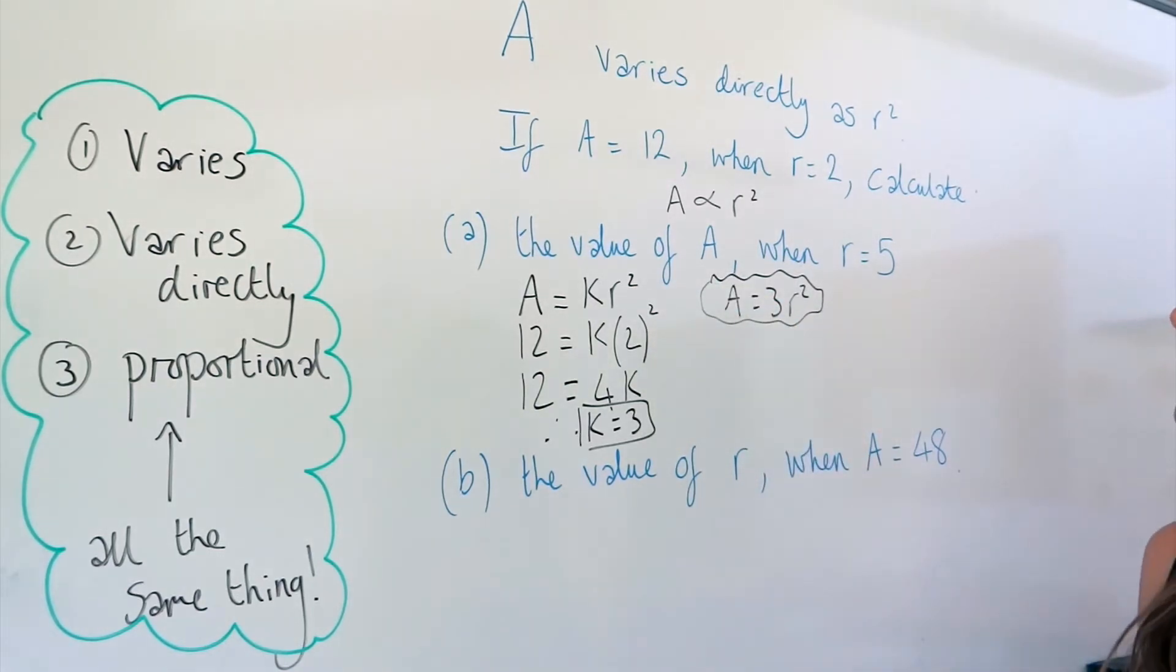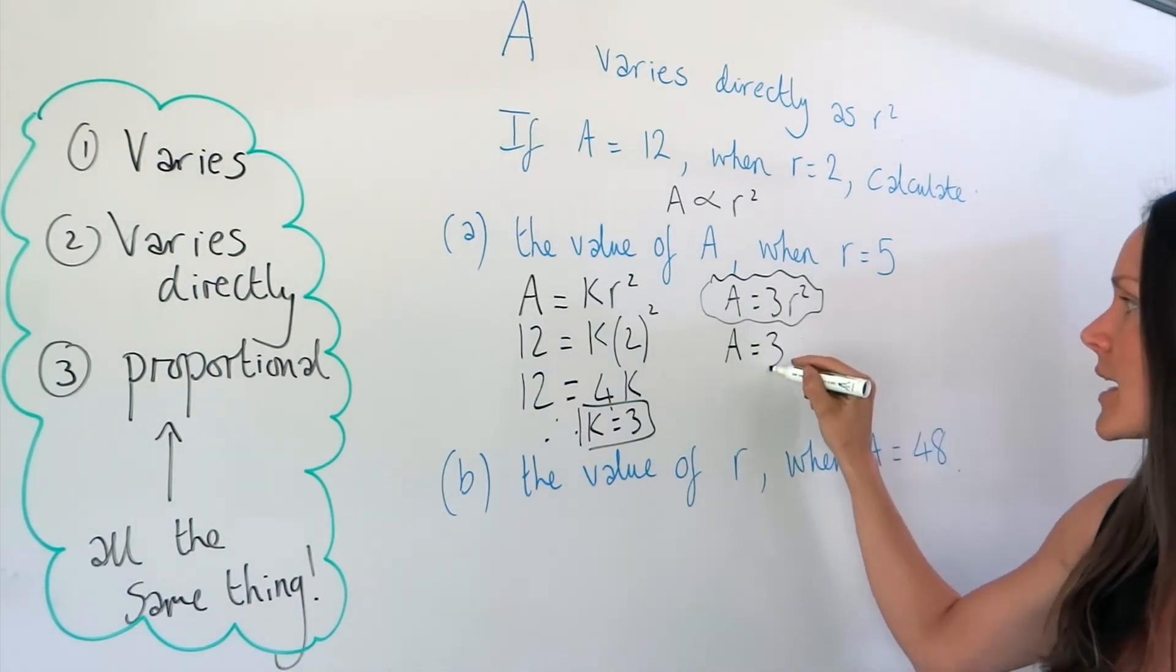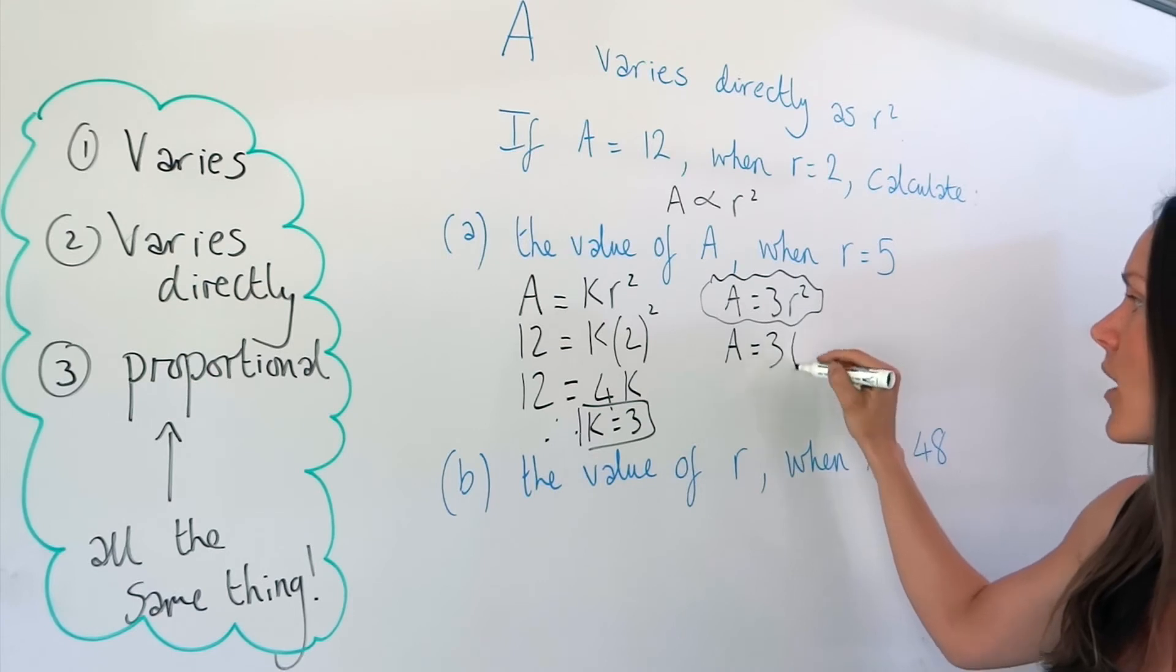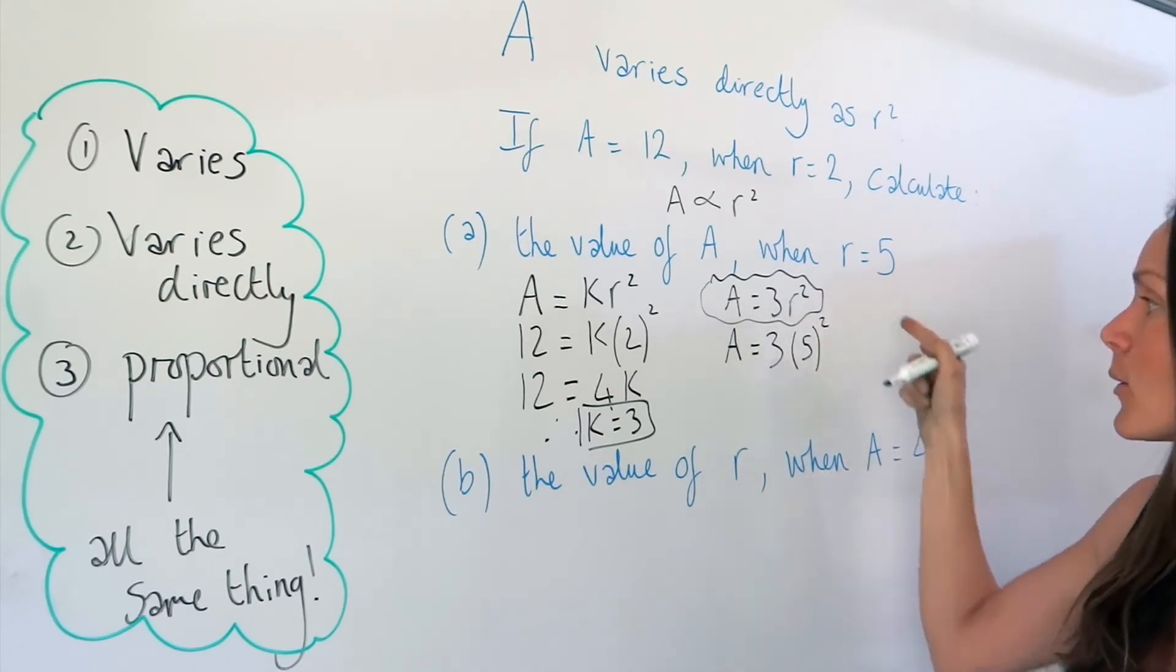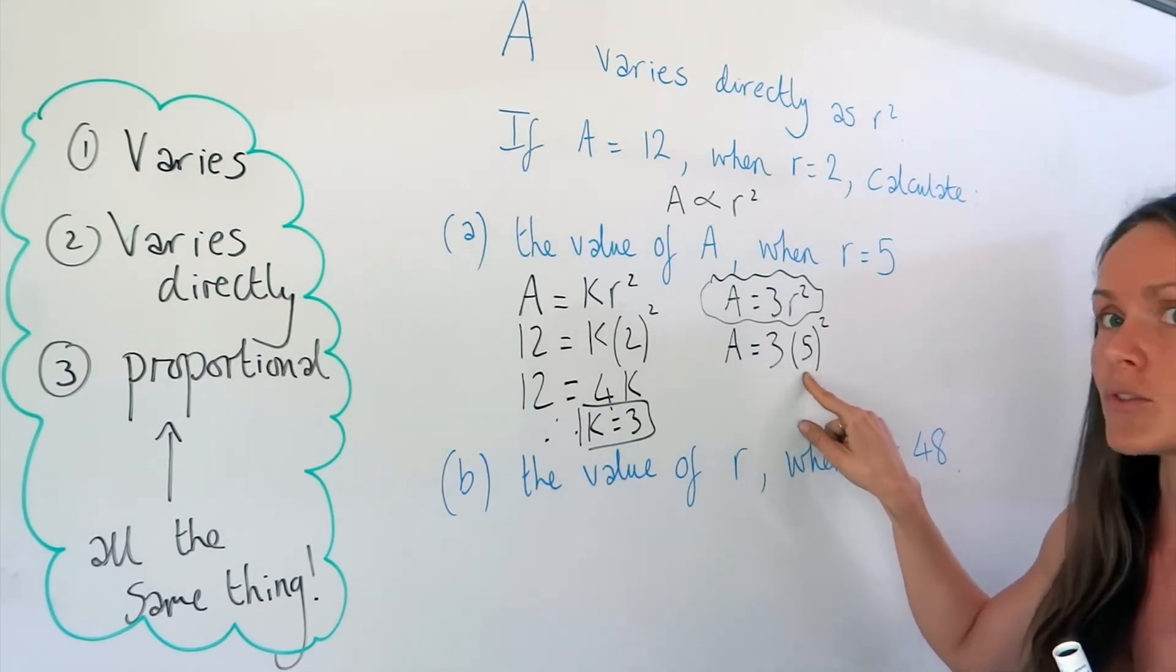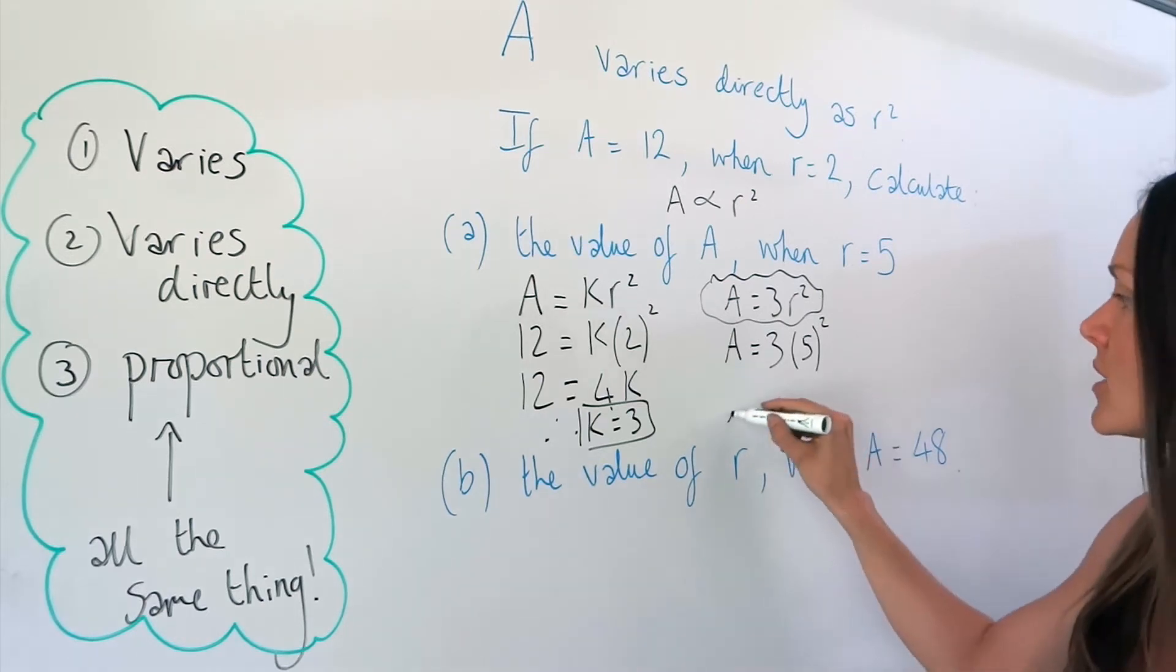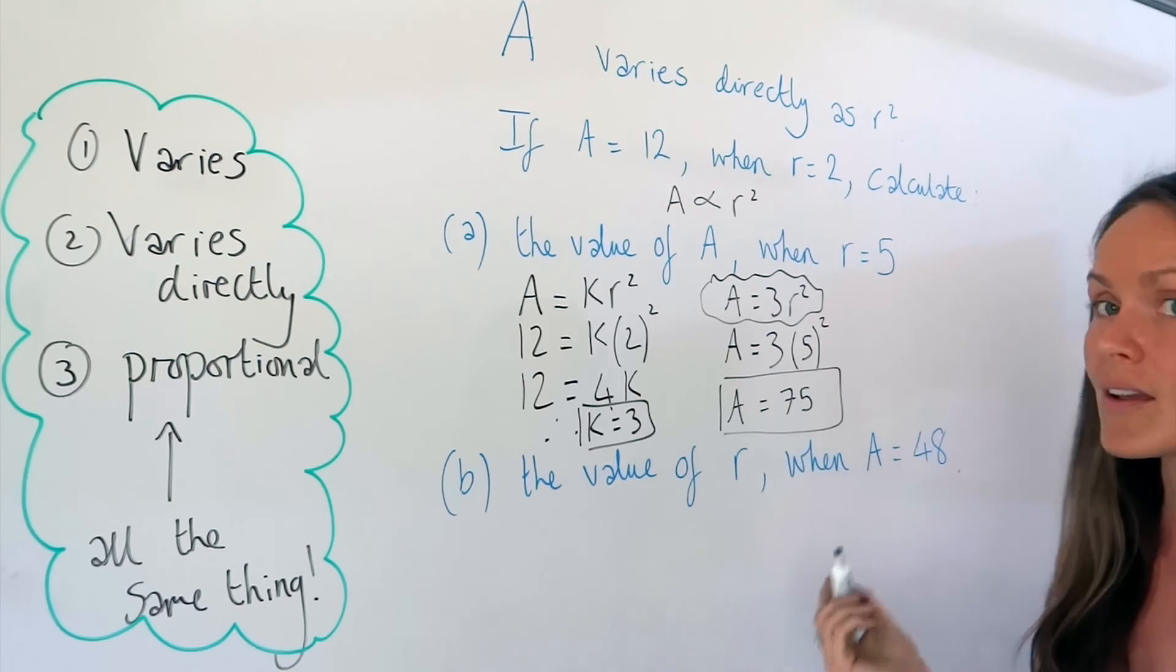So in part a, it asks us to change r to 5. So a is what we're trying to find, 3 is the constant, so that stays the same, and r is 5. So I've got 5, not forgetting the squared, and now I have to work this out. So 5 squared is 5 times 5, and 3 lots of 25 is 75. So a, in the first part of the question, is 75.